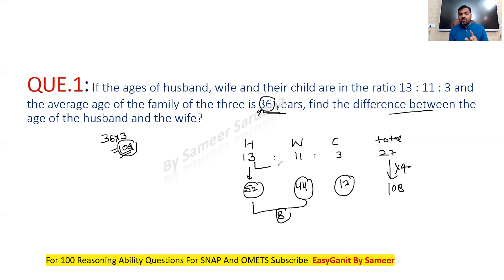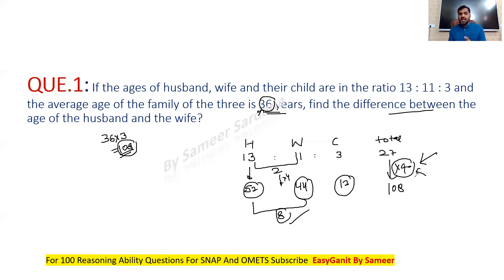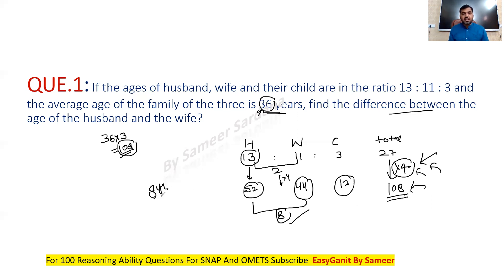You could have straight away taken the difference of the ratio as well. The difference of the ratio between husband and wife is 2. Just multiply by the multiplying factor of 4: 2 into 4, the answer would be 8. This multiplying factor is very important in ratio — just find it and multiply the ratio values to get the corresponding actual values. So the answer will be 8 years. Very simple and easy question.